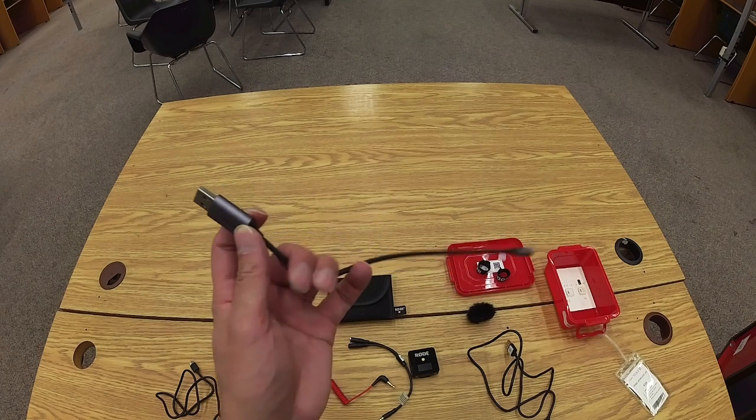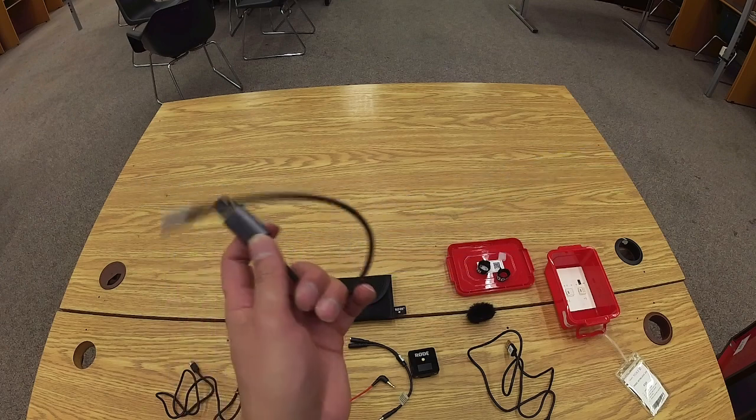Okay, and item seven is a USB adapter. You would use this cable to record to a computer in conjunction with the black-gray cable. Item eight is the Apple lightning adapter. Again, you would use this lighting adapter in conjunction with the black-gray cable. The gray end would go into the lightning adapter and the black end would go into the receiver.